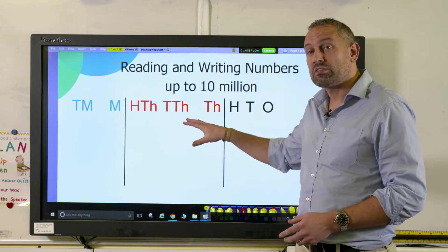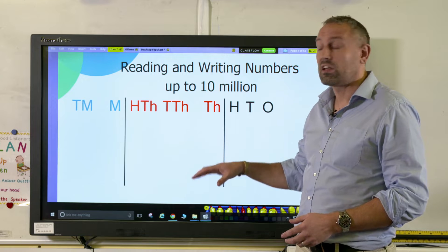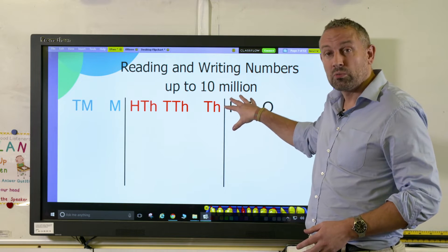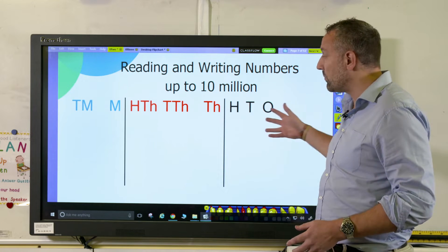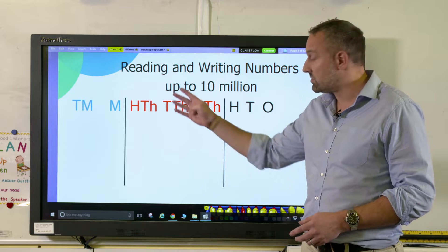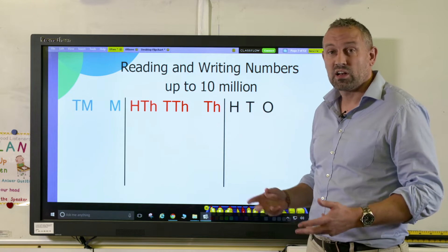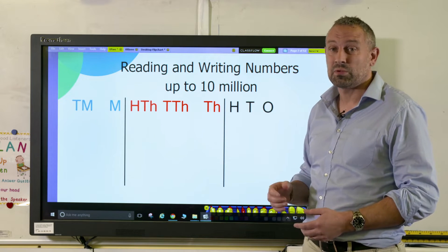Before your children start on this, they will have had an understanding of place value in the smaller groups. As you can see, we've separated our numbers here into three families, if you like, and that makes it really clear and simple to see.